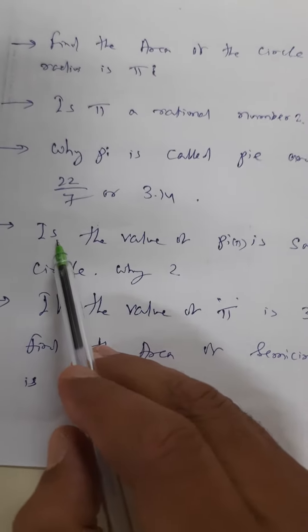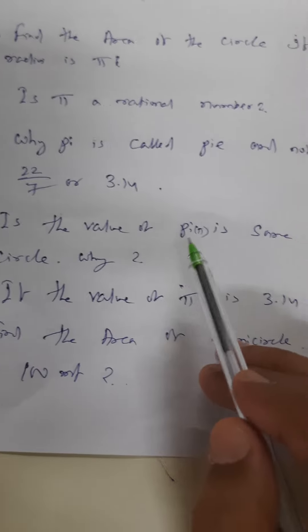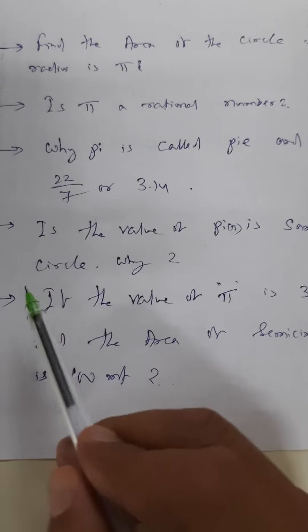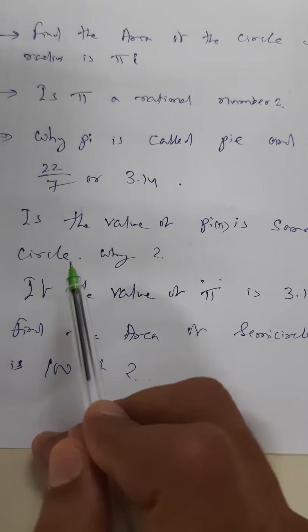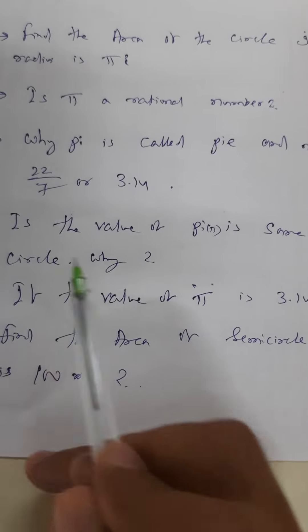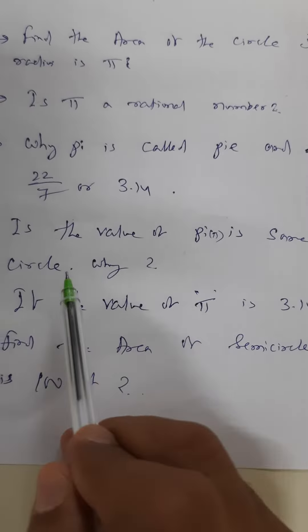The fourth one is: is the value of pi the same for all the circles? If it is yes, why? If it is no, then why?